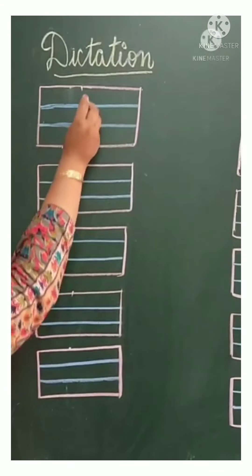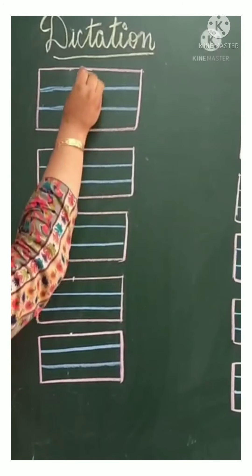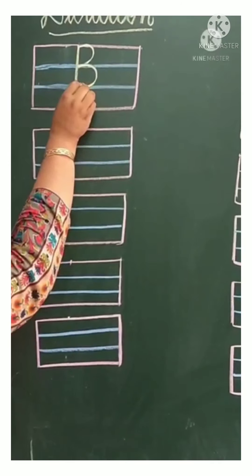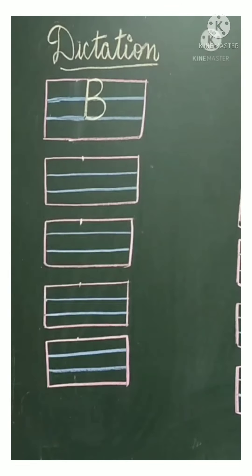First we will write B. We have to listen. What we have to write? B. So try to write B. Okay.